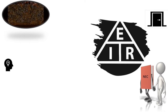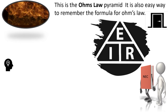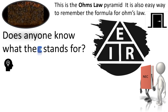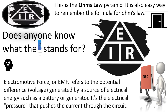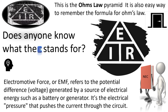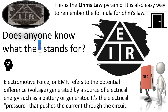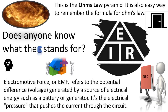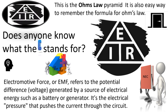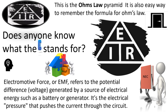The Ohm's Law pyramid is an easy way to remember the Ohm's Law formula. The E stands for electromotive force. It refers to the potential difference generated by a source of electrical energy, such as a battery or generator. It's the electrical pressure that pushes or pulls the electrons through the circuit. Just remember that the E stands for voltage.